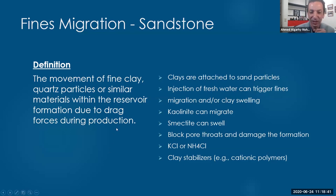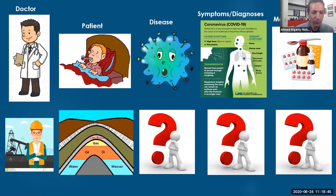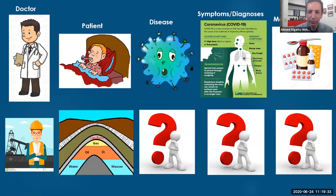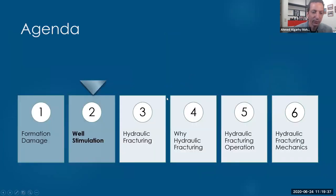So back to our game: what kinds of diseases have we talked about? We talked about formation damage - it is a disease. We talked about fines migration - it is a disease. What should be the symptoms? Decline in production, sudden decline in production. What should be the diagnosis? I can use PLT, I can do analysis, I can send a video camera, I can get a sample. These are ways to diagnose the problem. What should be the medicine? We have not mentioned any medicine or remedy yet - just wait.